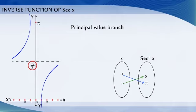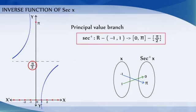Thus, Secant Inverse is a function from the set of all real numbers minus the open interval (-1, 1) to the closed interval [0, pi] minus {pi/2}.